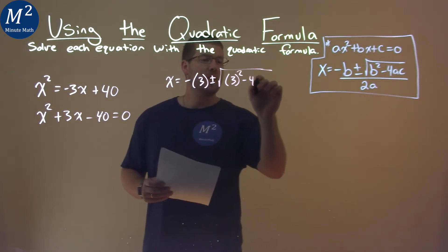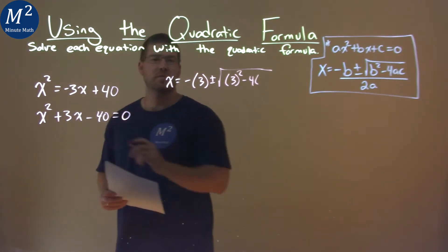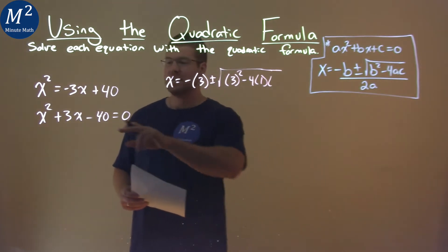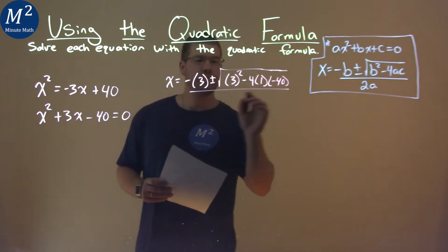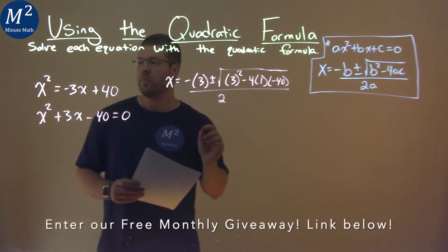Minus 4 times a, a being 1, coefficient in front of x squared, times c, which is negative 40, all over 2 times a, which is, well, 1.